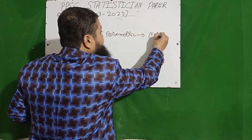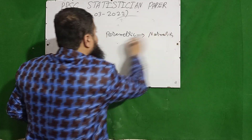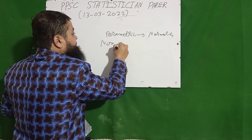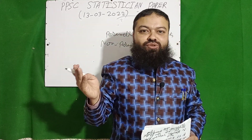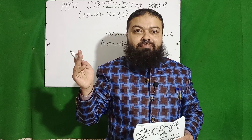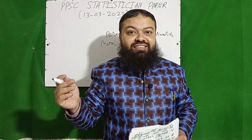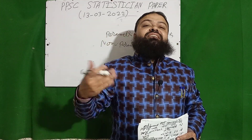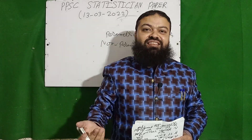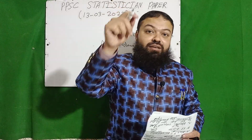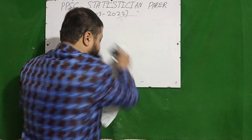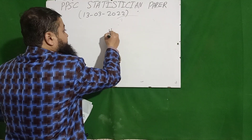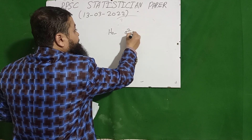The next question: parametric tests have the assumption of normality. Non-parametric tests — for example, the sign test, Wilcoxon signed-rank test, Mann-Whitney U test, and run test — are also called distribution-free tests. There is no condition of normality for these tests.